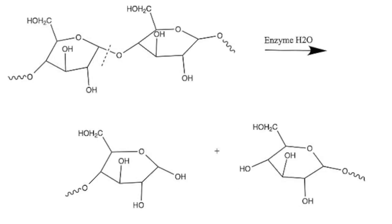The hydrolysis of starch forms alpha-glucose which is easily transported and used in respiration. The branched form of the chains has many ends so they can be acted on by enzymes simultaneously, meaning glucose monomers can be released quickly.